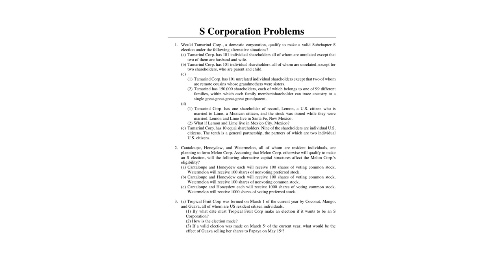In this video, we'll look at six different S-corporation problems. This is meant to be a continuation of the S-corporation basics video. Problem one: would Tamron Corporation, a domestic corporation, qualify to make a valid subchapter S selection under the following alternative situations? Problem one focuses on one of the four requirements to be an S-corporation, and we'll go through those in each situation.